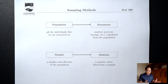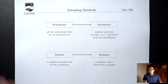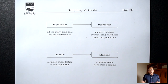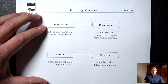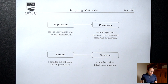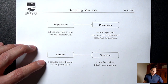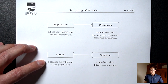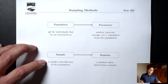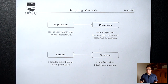Most of the time the population is so big that you can't collect data from everybody in it. You don't have the time, you don't have the money, you don't have a way to get in contact with everybody. So instead of getting data from everybody in the population, you'll collect data from a sample — a smaller sub-collection of the population. Instead of asking everybody in Sacramento, you may ask a sample of a thousand people.